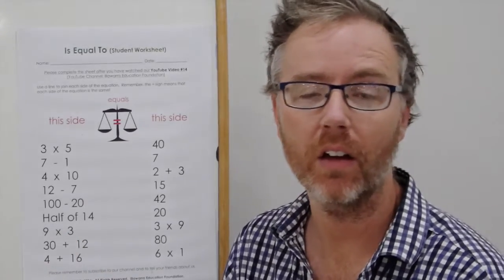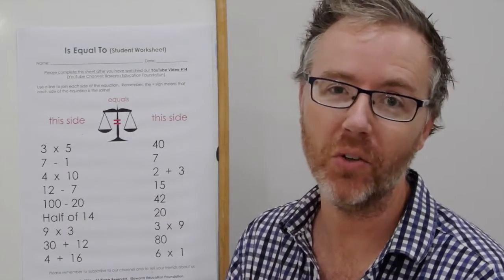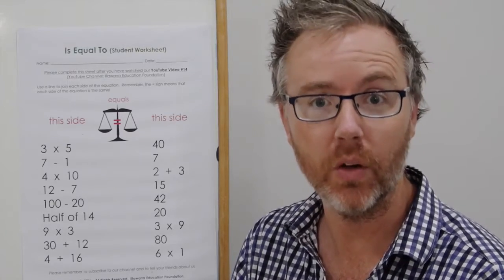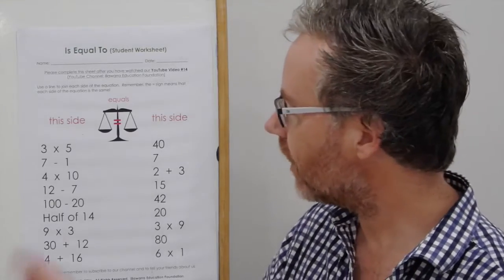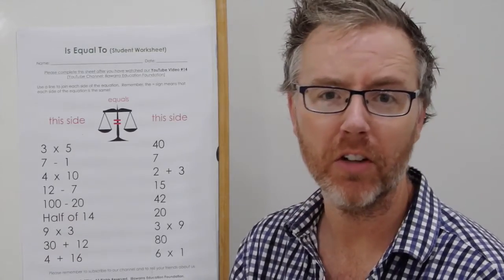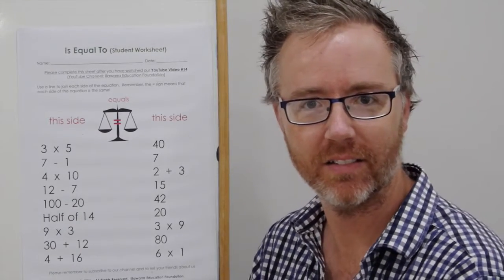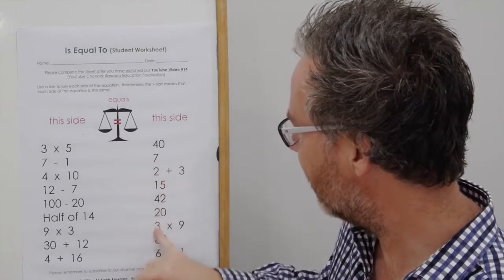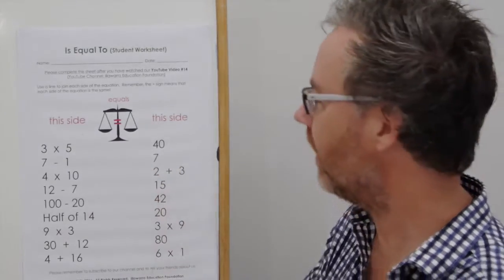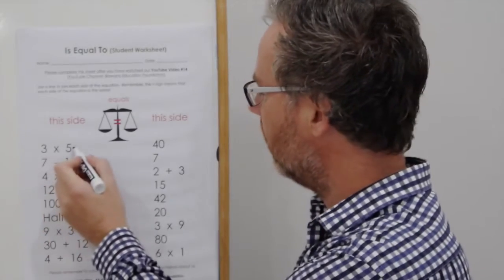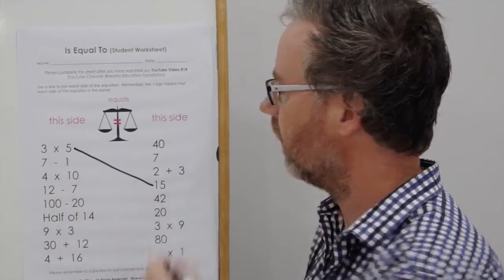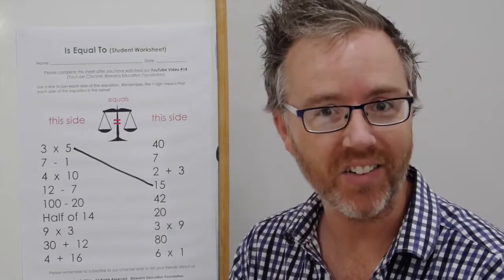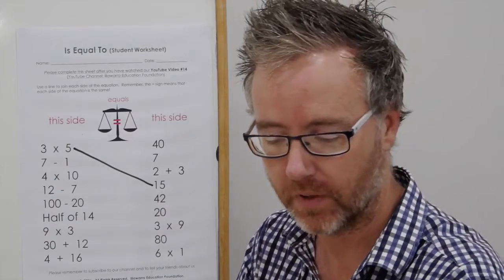We're actually going to be together using our pencil to actually link a line to join the two equal sides together. So, let's start with the first one. 3 times 5. What's the answer? 15. There's 15. Let's join. 3 fives is equal to is balanced with 15. Let's do the next one.